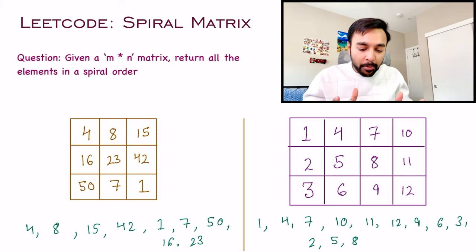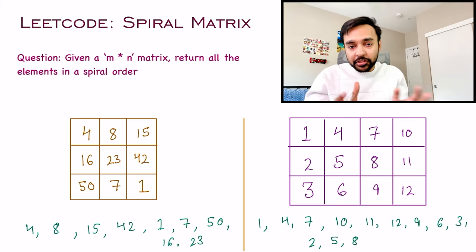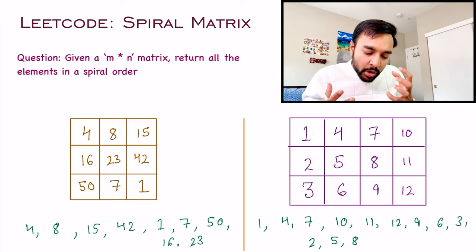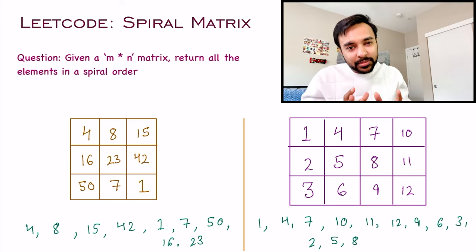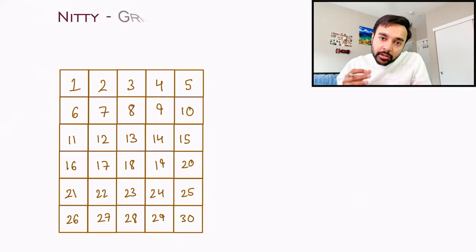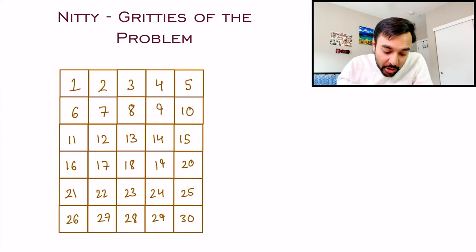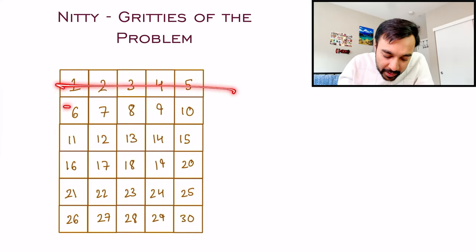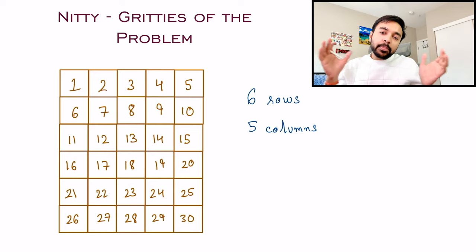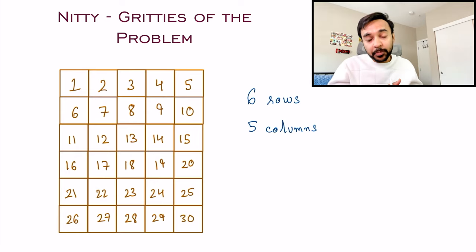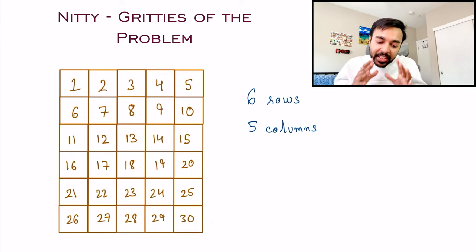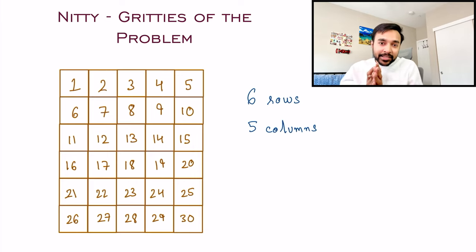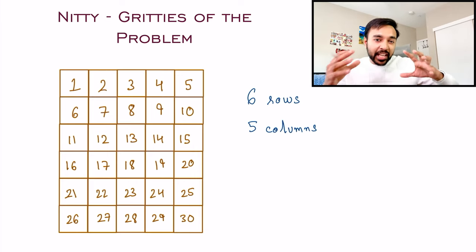Now, if you feel you have understood the problem statement, feel free to try it out first. Otherwise, let me go into a discussion and see what makes this problem so important for interviews. To keep things interesting, I am taking a bigger example — a matrix with 6 rows and 5 columns. Personally, I have never fully understood why this problem is so important, but from my experience as an interviewer, I have seen common mistakes candidates make, which made me realize this problem can assess how a candidate is actually thinking.